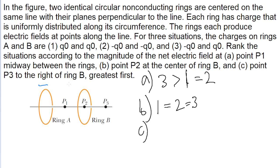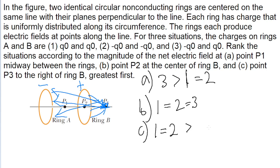In the case where one ring is negatively charged and one is positively charged, however, there will be some electric field lines pointing to the right from the positively charged one, and some pointing to the left from the negatively charged one. So there will be some canceling out in that case, and the resulting net magnitude will be smaller than in scenarios one and two. Therefore, scenarios one and two have equal net field magnitudes at P3, and they are both greater than the magnitude for scenario three. That is how our rankings go for this problem.